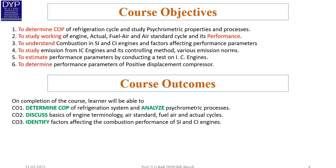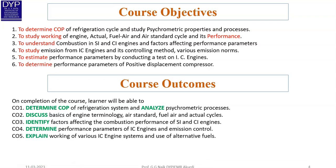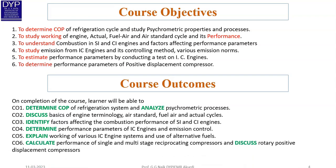CO3 — identify factors affecting the combustion performance of SI and CI engines. CO4 — determine performance parameters of IC engines and emission control. CO5 — explain the working of various IC engine systems and the use of alternative fuels. CO6 — calculate the performance of single and multi-stage reciprocating compressors and discuss rotary positive displacement compressors. Those were the objectives and outcomes of this course.